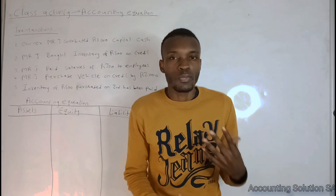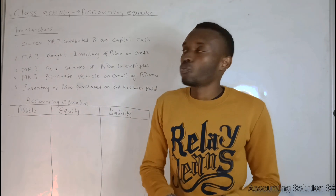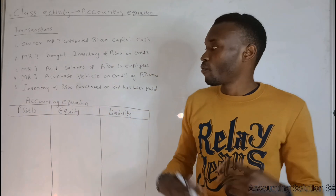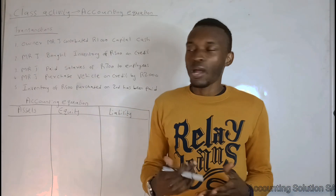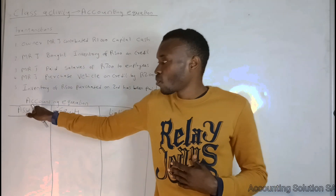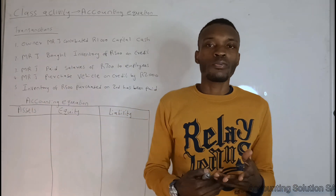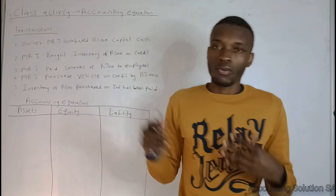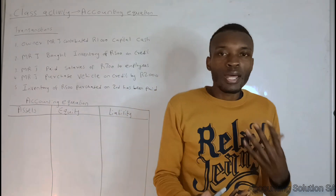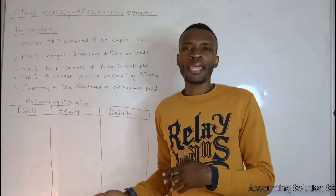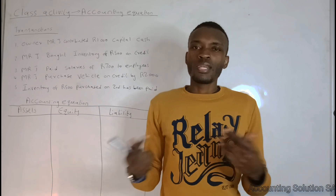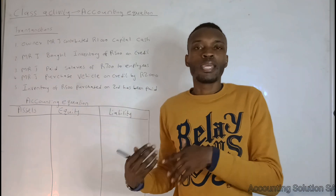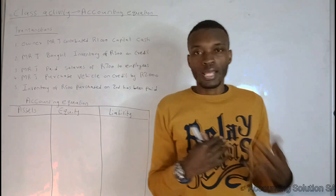When we talk about the accounting equation, there is a specific format you also have to know. The first step is to identify assets — you have to know what an asset is. Assets are items owned by a business. Examples include equipment, a vehicle, land and building, bank, and inventory. Please make sure you visit your textbook for more examples related to assets.